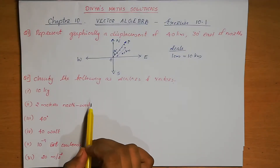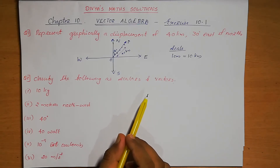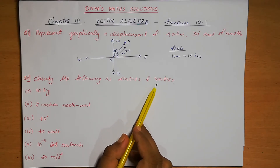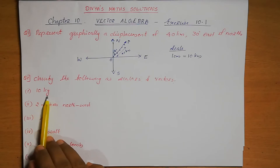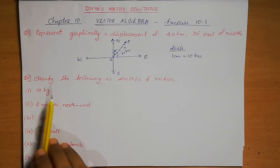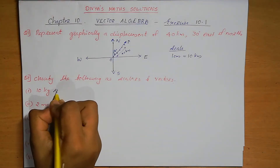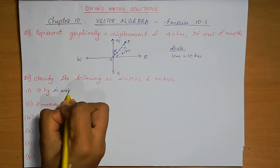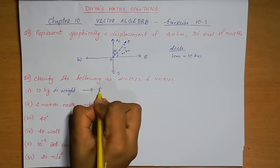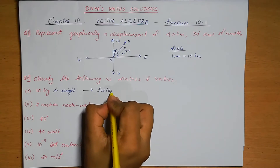Question number 2. Classify the following as scalars and vectors. A quantity which has only magnitude is called scalar. A quantity which has both magnitude and direction is called vector. First one is 10 kg. 10 kg is the unit of weight, which has only magnitude. So 10 kg is a scalar.